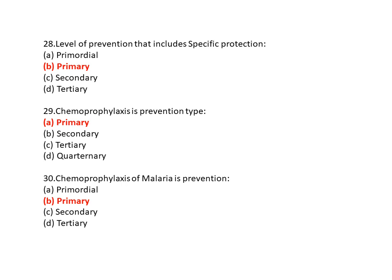Question 29/30: Chemoprophylaxis is an example of which type of prevention? Option A is primordial, option B is primary, option C is secondary, and option D is tertiary. So option B is the correct answer — primary prevention.